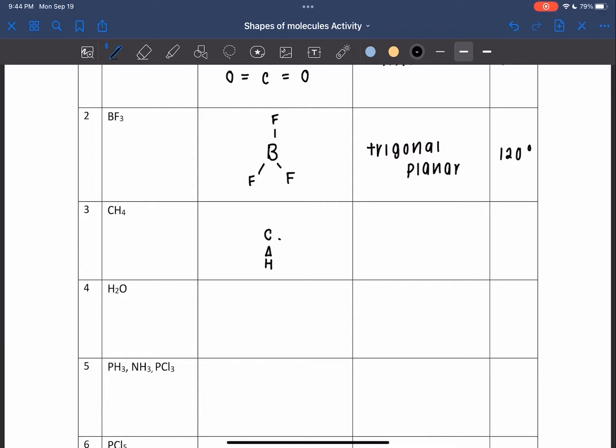For four bond pairs, it is called tetrahedral with a bond angle of 109.5 degrees. An example for it is CH4.